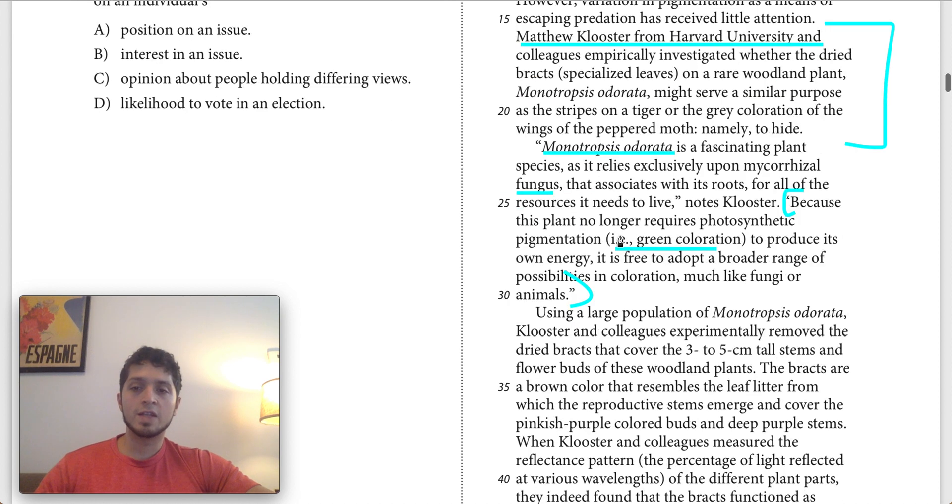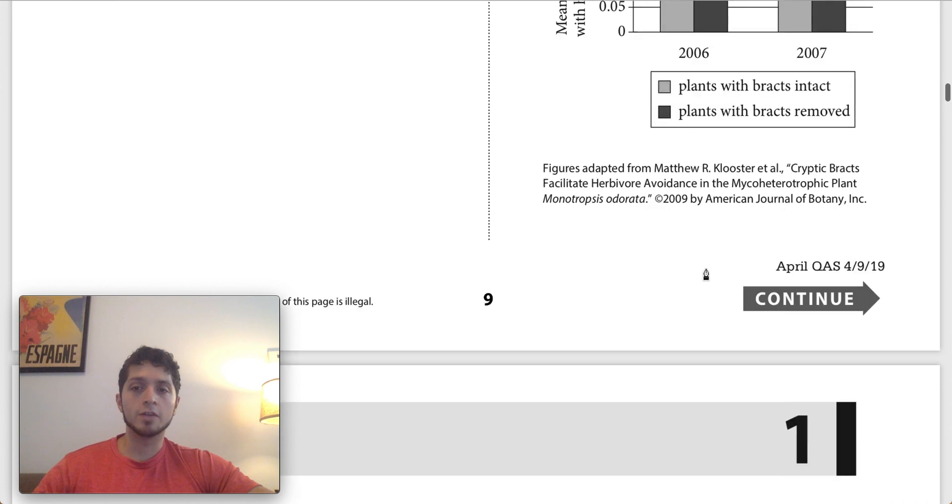So for that reason, I think C is a much better answer choice than B because B really only focuses on this specific plant. It doesn't really talk in general about all the other plants. We know that C is our answer. And what it tells us about many plants and the nutrient requirements is that their necessity to have to do photosynthesis basically means one, that they're green, but two, that they have a more narrow range of possibilities in coloration.